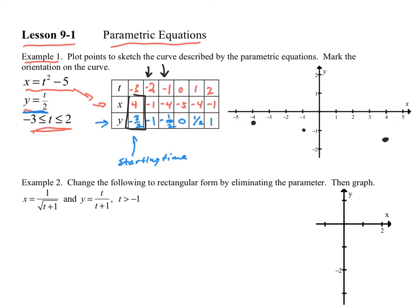Notice that a lot of times we're going to end up with something that's not a function, and that's what happens in this case. Keep plotting and then connect them up. Here are the rest of my points. I'm starting here, drawing here, and it should be a smooth curve. I finish here because they do tell me I end at time 2. So I should put in direction as well — that's the direction as I go. That would be the graph of my parametric equation.